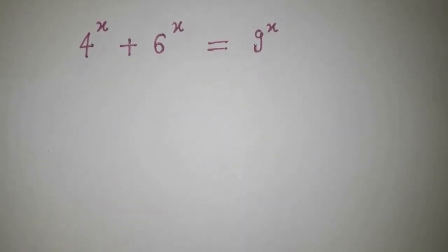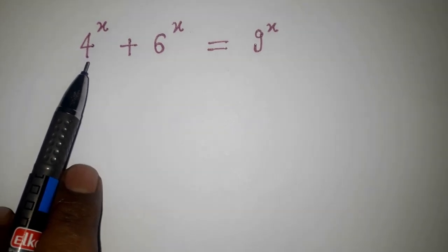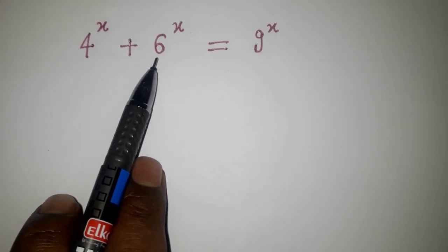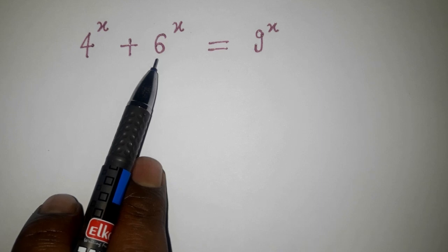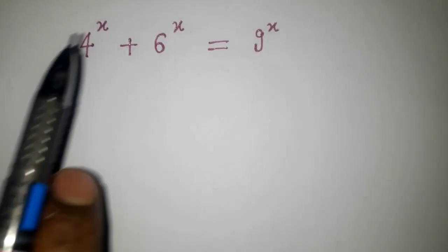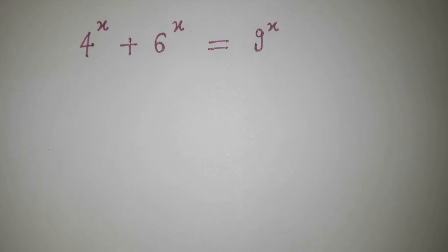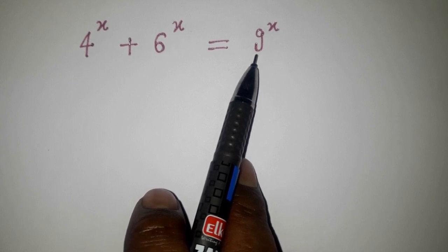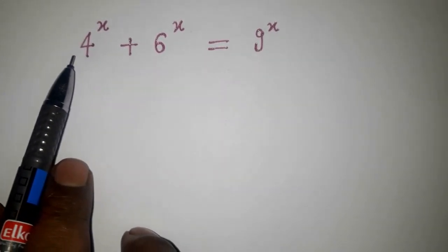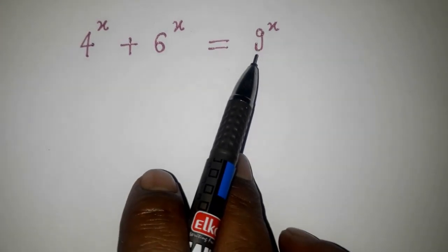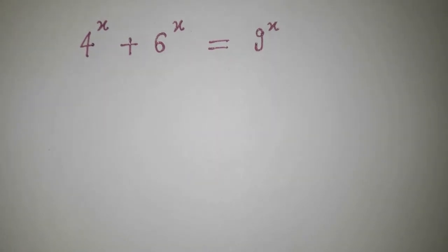Here we are seeing that we have 2 as a base — 2 to the power 2, that is 4. And here also the base is 2 multiplied by 3; 6 can be factorized into 2 into 3. So 2 to the power x is also there, 3 to the power x is also there. And here we have 3 to the power 2, since 9 can be written as 3 to the power 2.